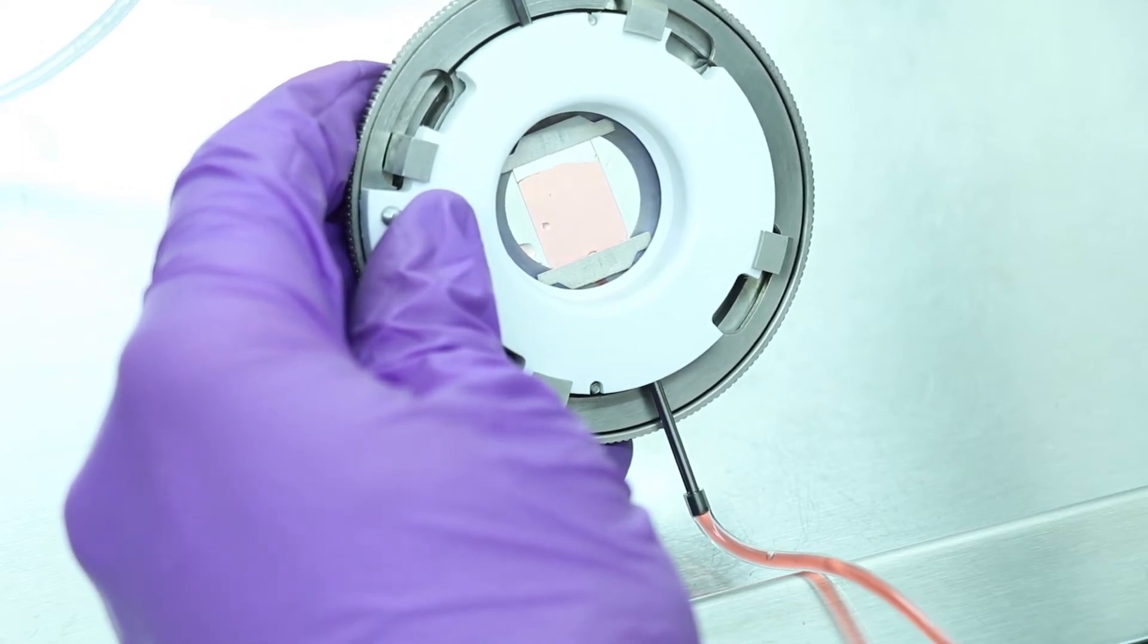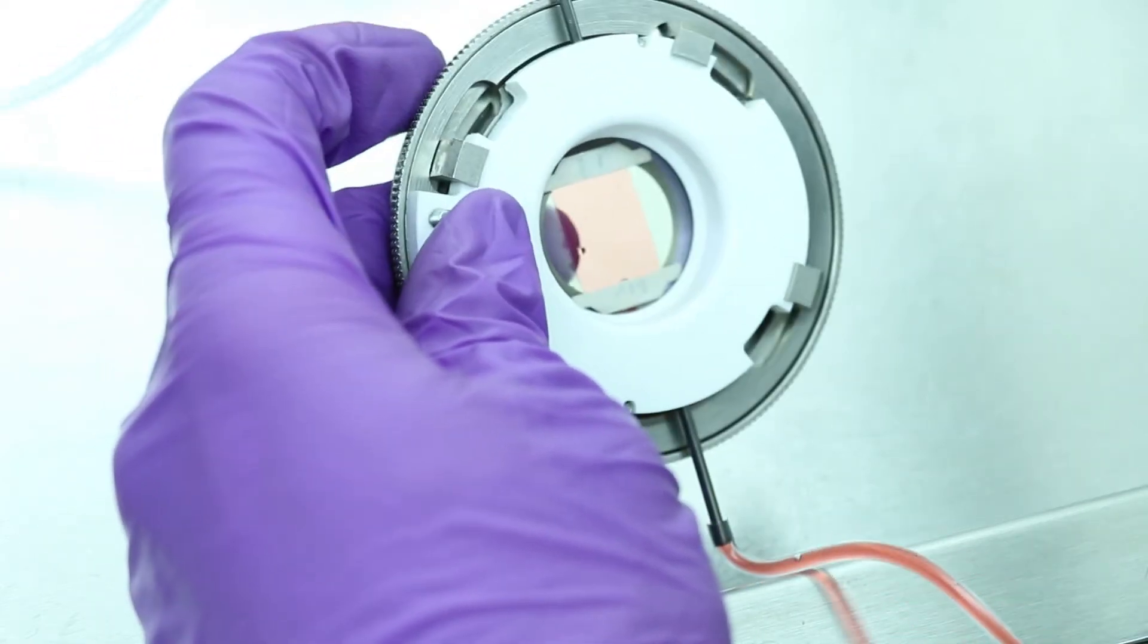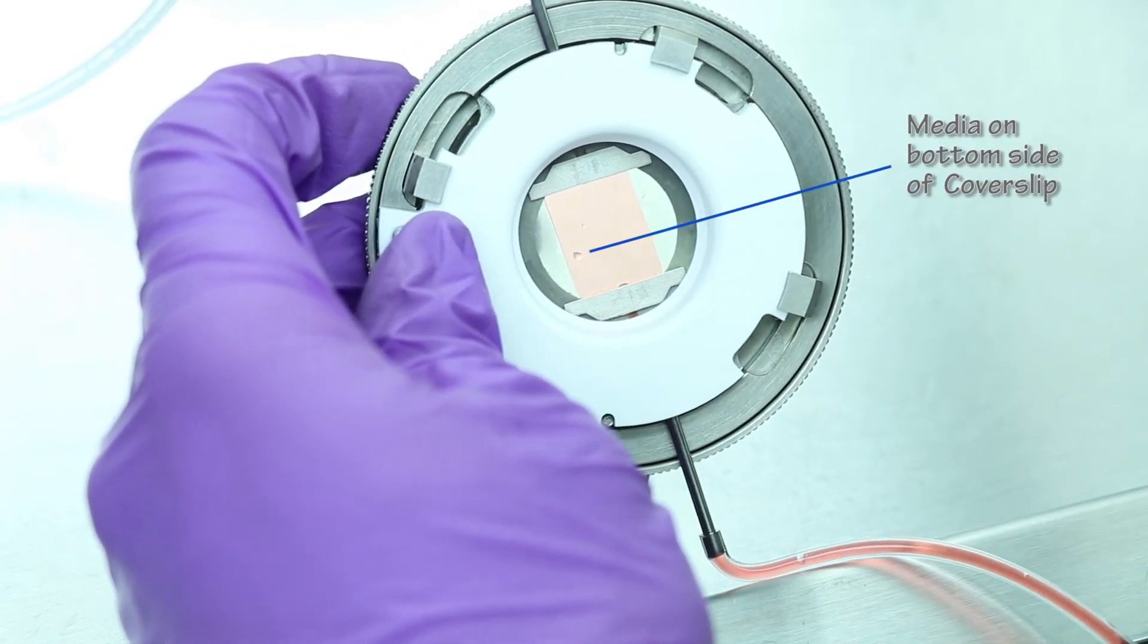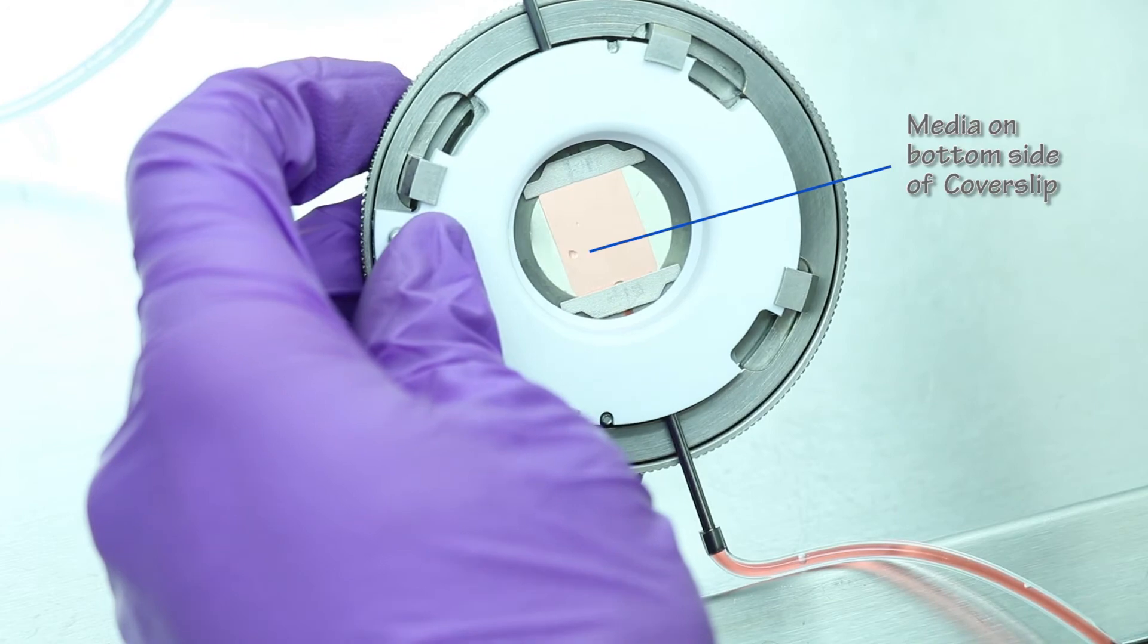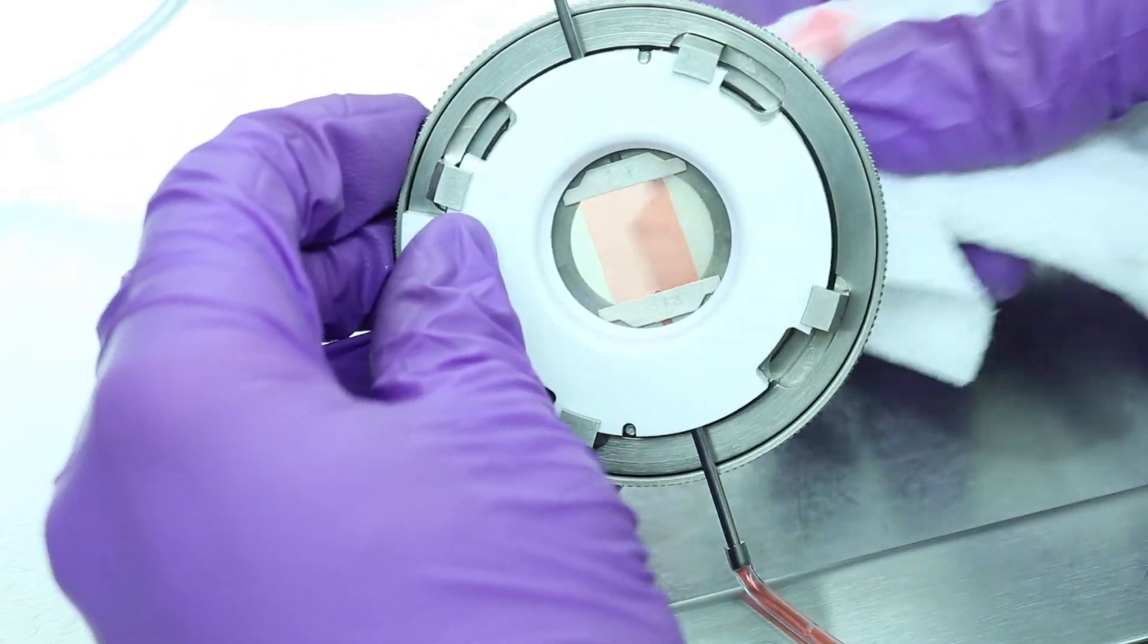If air bubbles are present, you can simply tap on the chamber while perfusing and air bubbles will clear. Wipe the additional media from the cover slip to prevent any media from contacting the microscope or dripping.